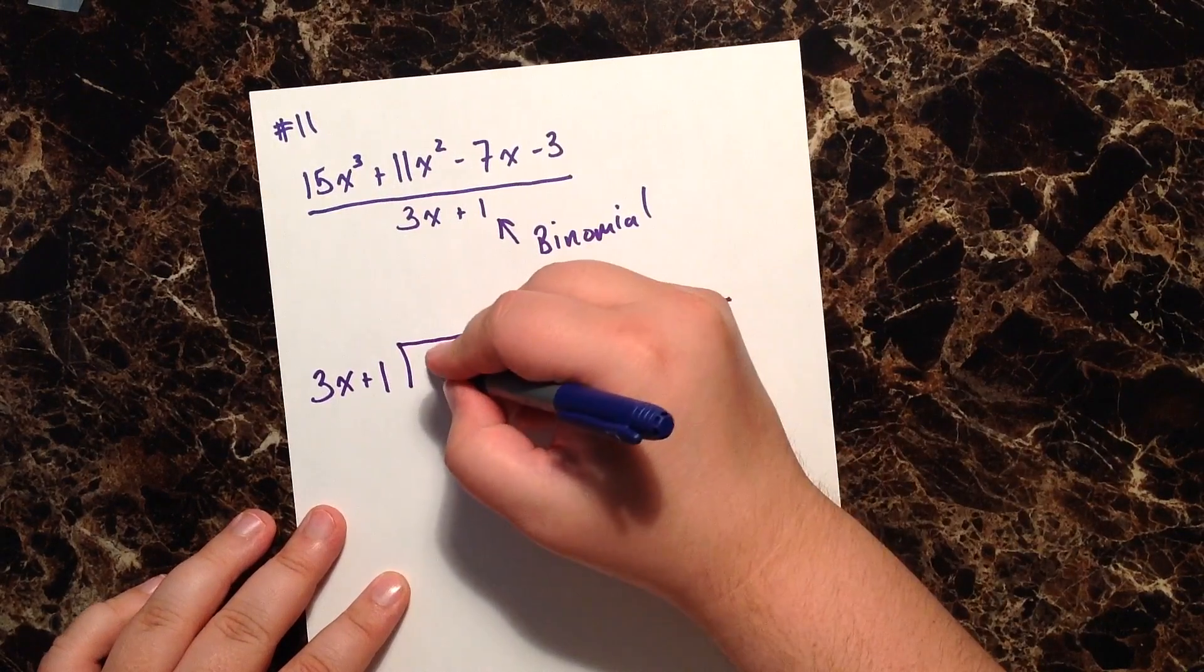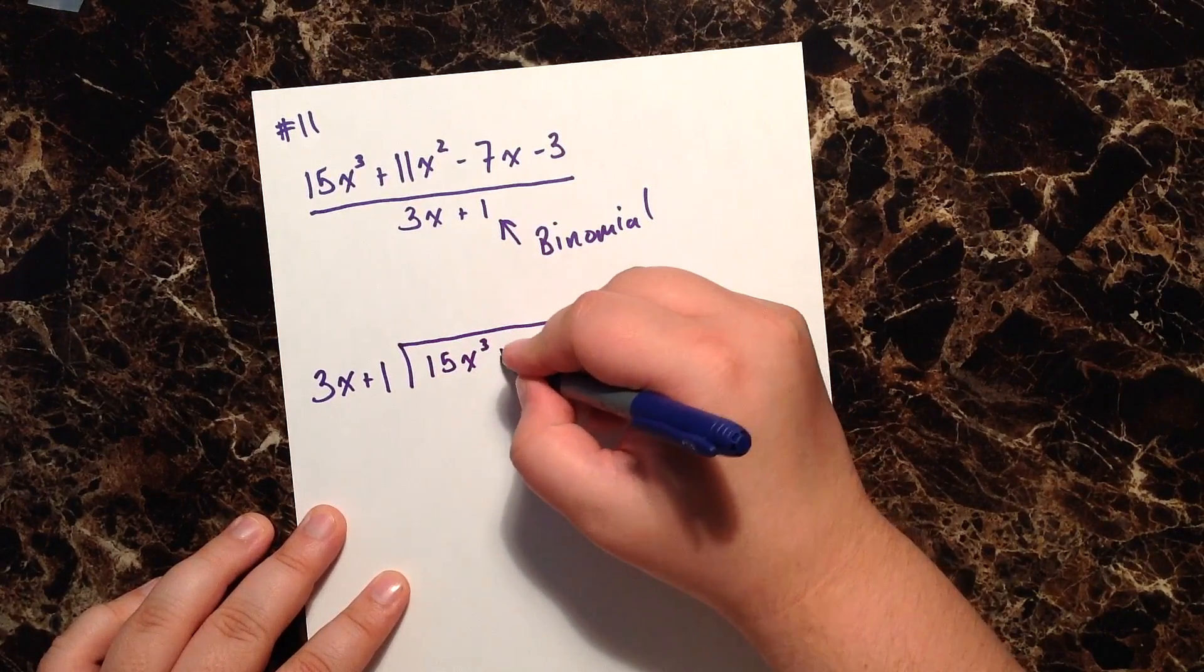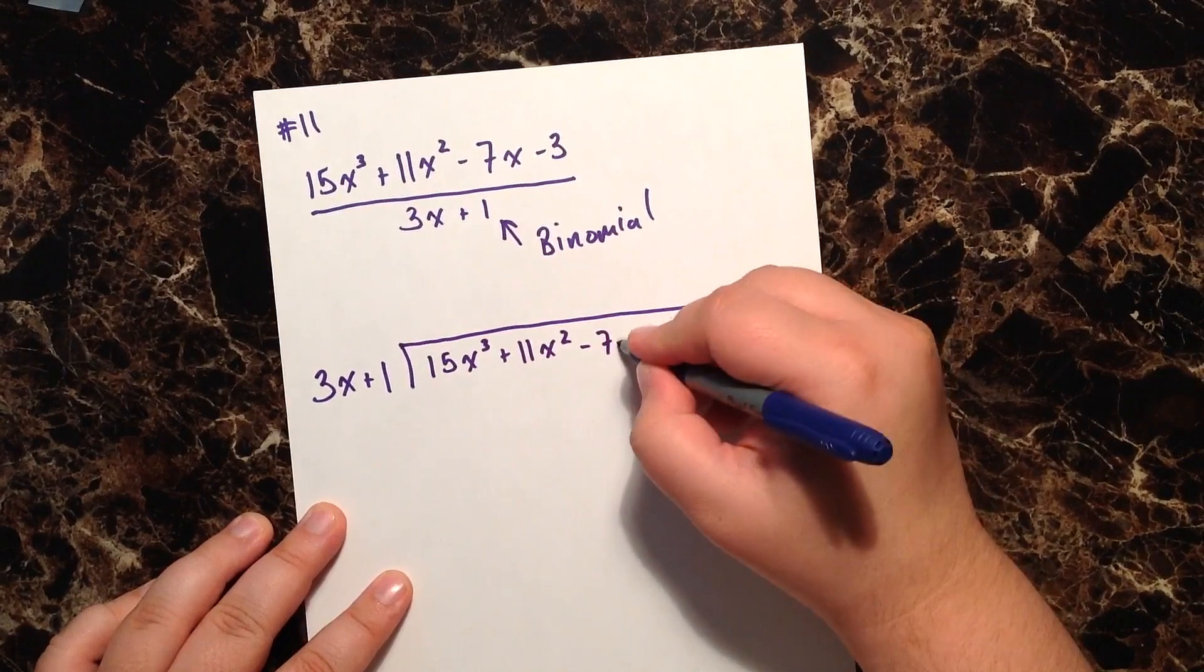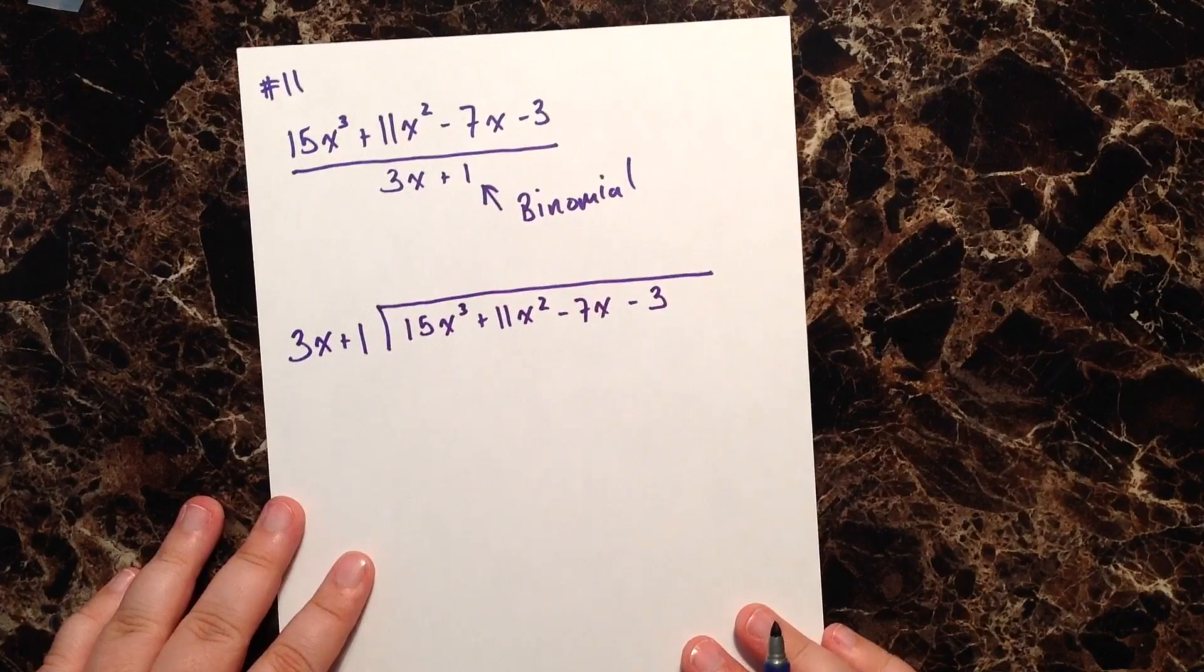We're going to take our denominator and put it on the outside of our house, and we'll go ahead and rewrite our numerator under our roof.